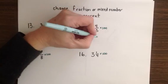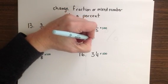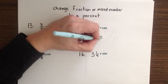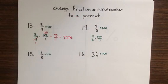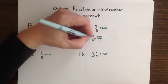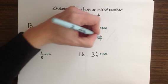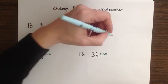4 fifths times 100 has us putting the 100 over a 1 again, then reducing this time by 5, and then multiplying.